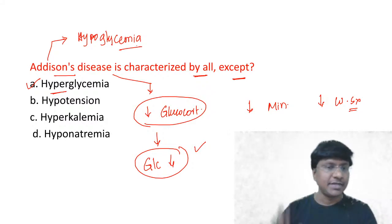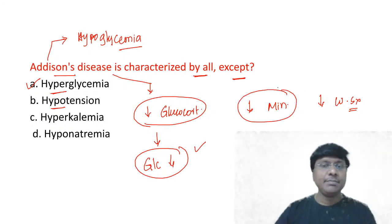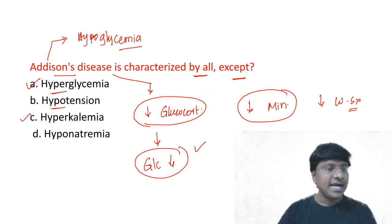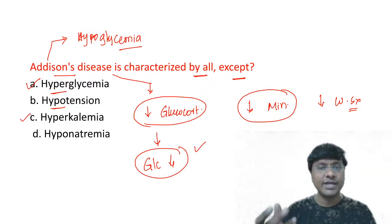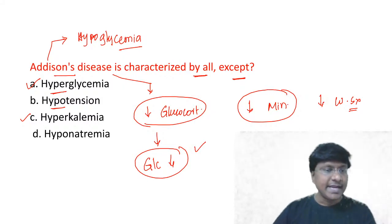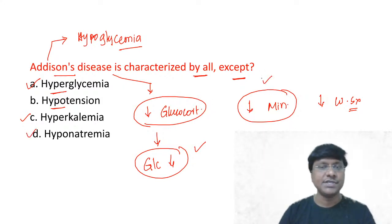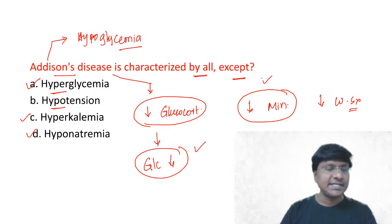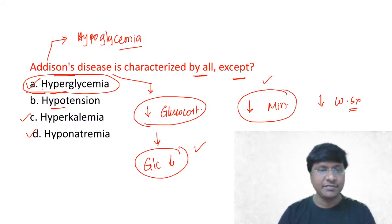Hypotension will be there because mineralocorticoid deficiency reduces blood pressure. Hyperkalemia will also be there because without mineralocorticoids, potassium excretion does not occur. Hyponatremia is again because of mineralocorticoid deficiency — mineralocorticoids cause sodium retention, and without them, hyponatremia results. So the answer is hyperglycemia will not be seen in Addison's disease.